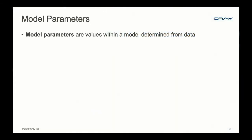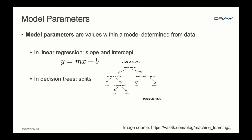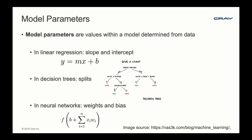So what is a model parameter? Model parameters are values that are within a model and determined from the data itself. In a linear regression, this would be your slope and intercept, M and B. In a decision tree, this would be your splits in your tree made to optimize your model. And in neural networks, these are our weights and biases.